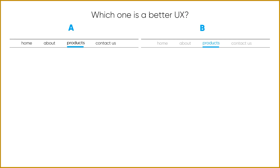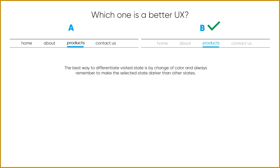Example ten: which is a better UX for a navigation bar with links — Home, About, Products, and Contact Us? Option A highlights the active 'Products' link by making it bold with a blue accent below. Option B dims all other links and makes the selected item stand out. Option B is better — the best way to differentiate the active state is by changing colors, making the selected state darker and bolder than the others.